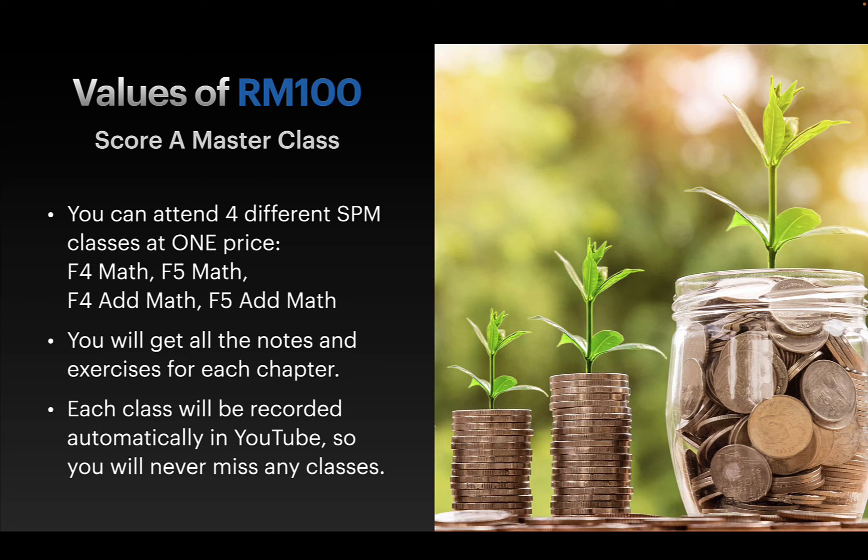My objective is to help those students who are not so good in Math and MF. In order to help them, I need to ensure they master all the Form 4 and Form 5 topics in order to score well in SPM. This is why I came out with one whole package to help those students who want to score well in both subjects for just RM100 per month. After you divide it, it's like RM25 per class, so I think the price is considered reasonable.